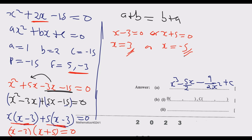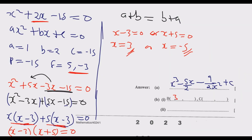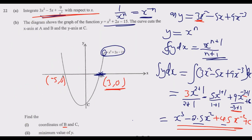Since x = 3 is on the positive side of the x-axis, the coordinates of B are (3, 0). The point at x = −5 corresponds to point A. So the coordinates of B are (3, 0) — we write this in the answer space.